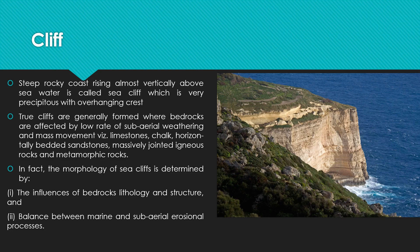This is a feature of mass wasting. Rock types involved include limestone rock, chalk, horizontal bedded sandstone, jointed rocks, and metamorphic rocks. This is a form of morphology — the influences of bedrock, lithology, and structure.